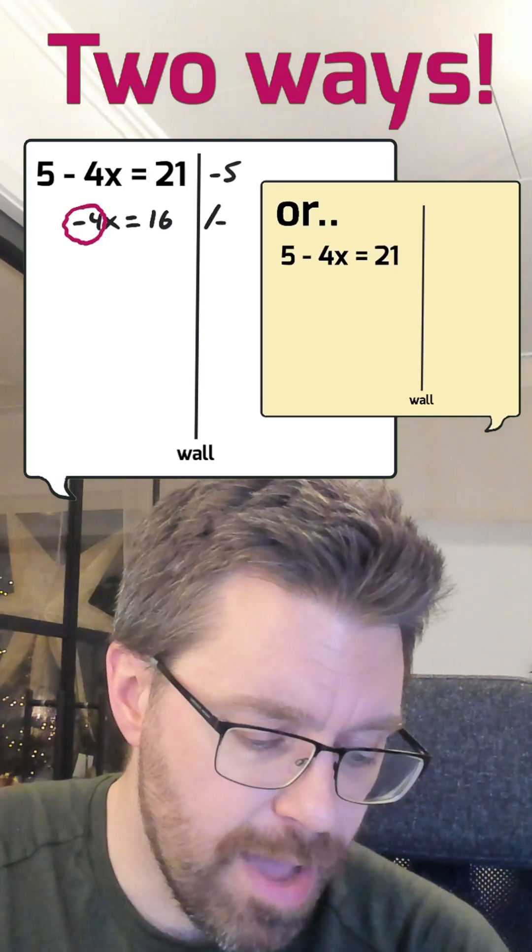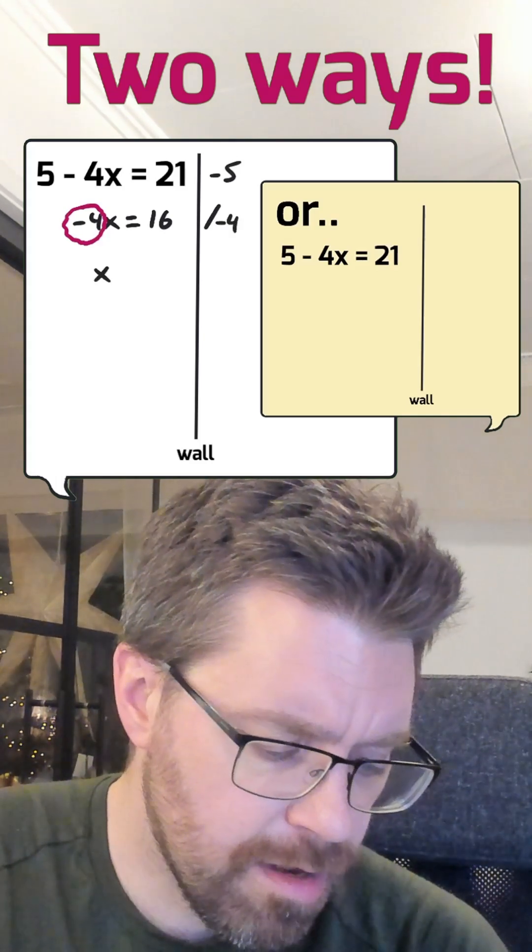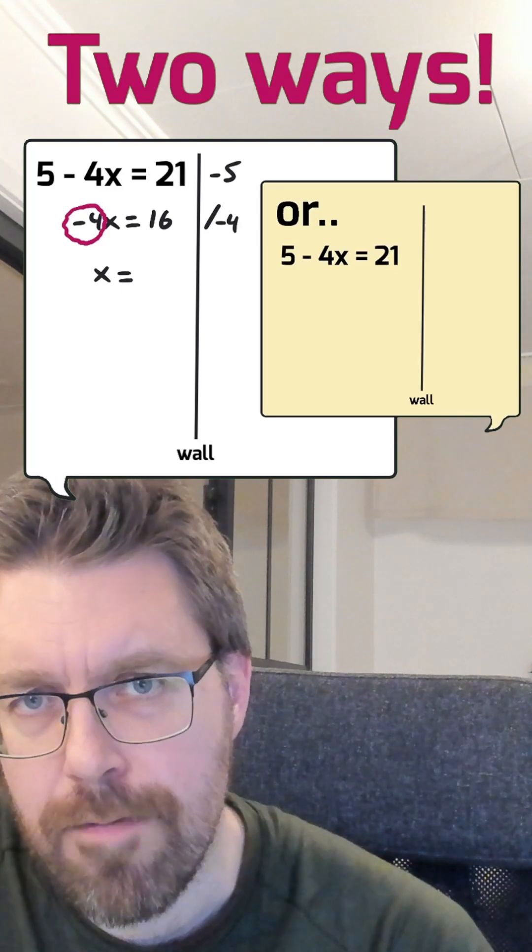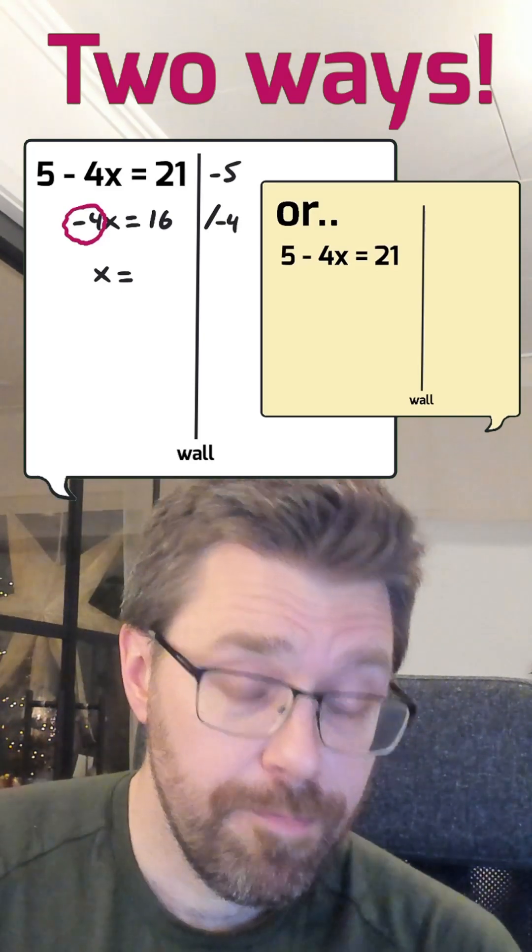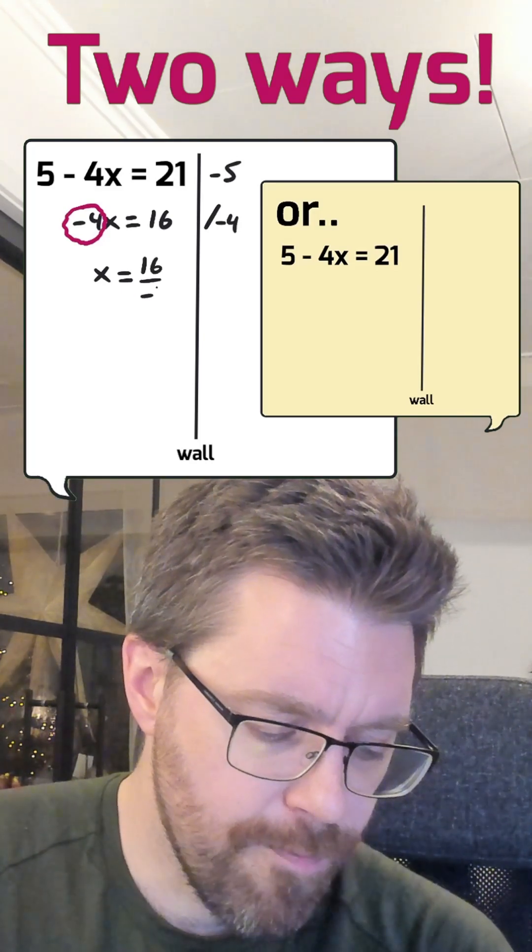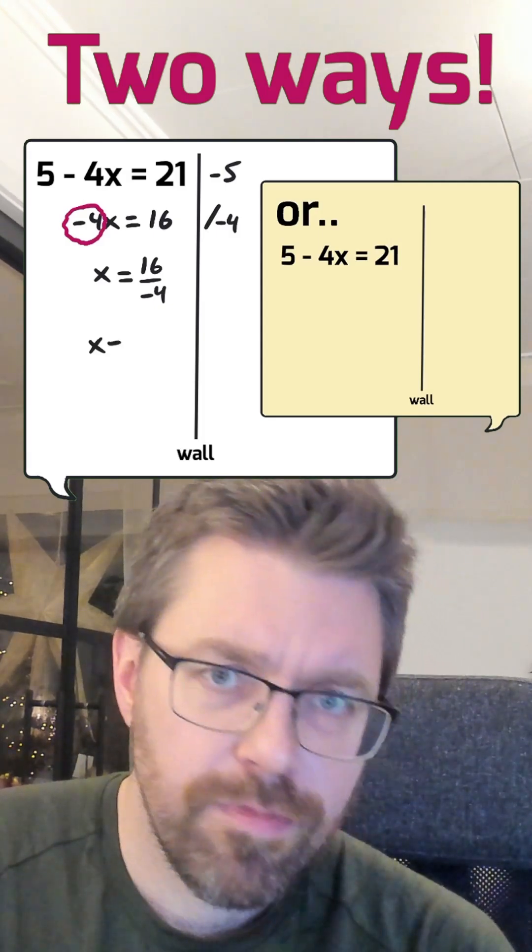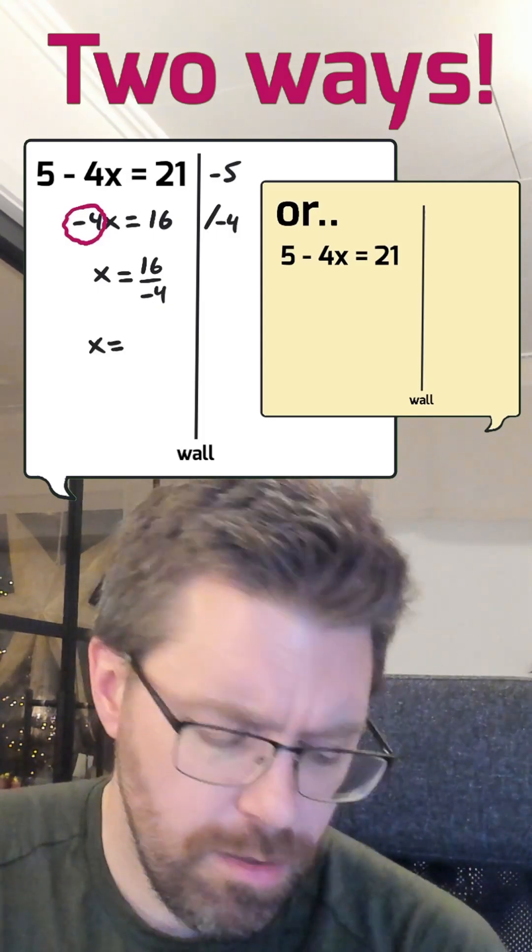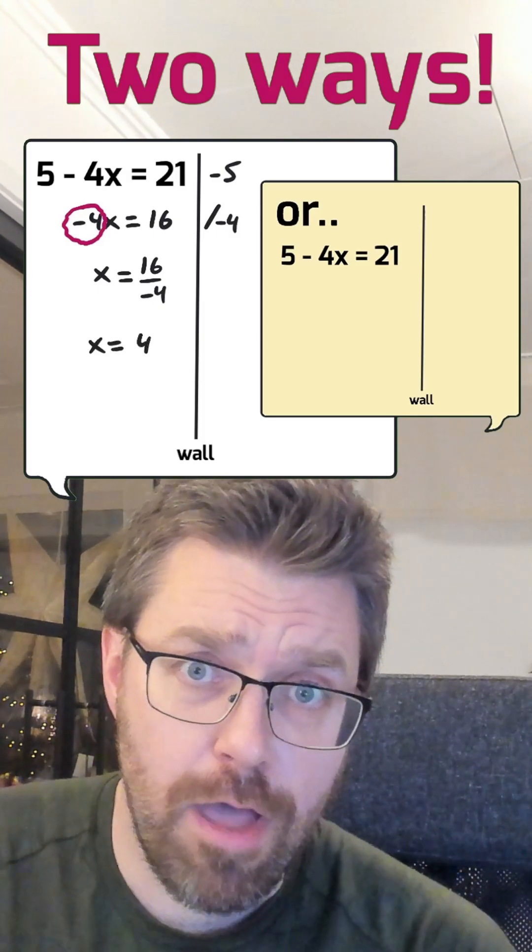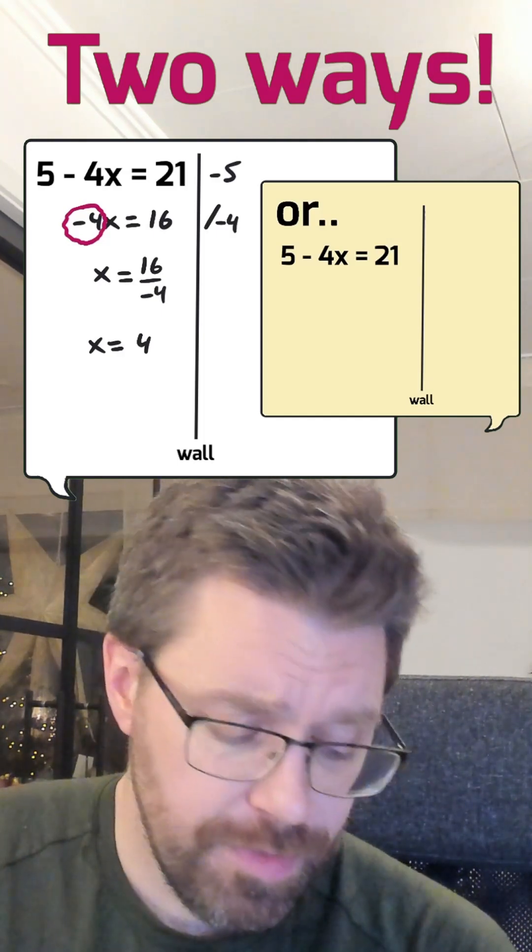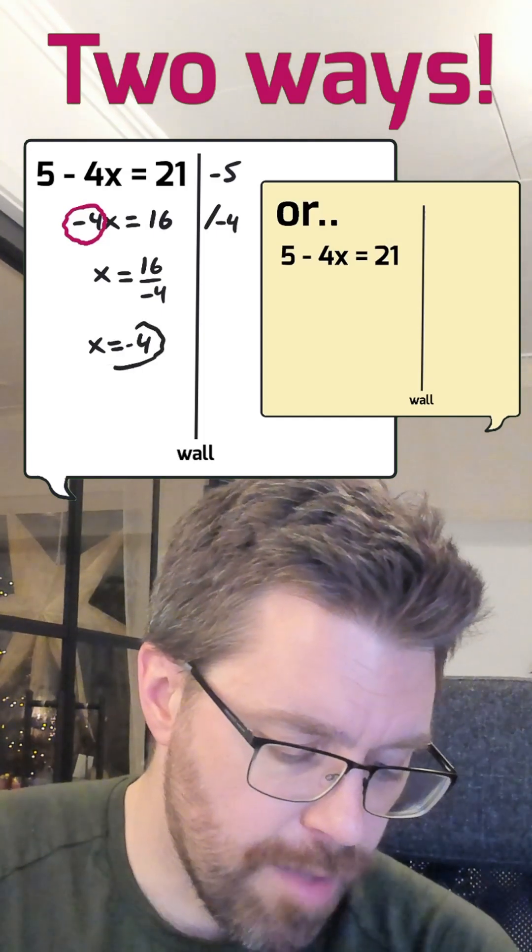Divide by minus 4 and then minus 4 goes away. On the right side, we've got 16 divided by minus 4. And I know that 16 divided by 4 equals 4. But if you have one negative sign, then the answer will become negative.